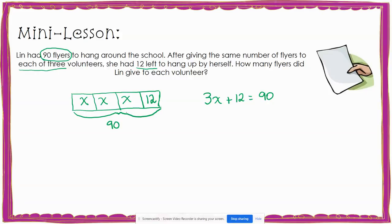Now I can solve using my tape diagram and my equation. I notice that I have a 12 with my variables in the tape diagram. If I need to solve for each variable, I need to have my variables by themselves, so I'm going to take 12 away from the tape diagram. That means I need to take 12 away from 90 as well. When I subtract 90 minus 12, I get 78.